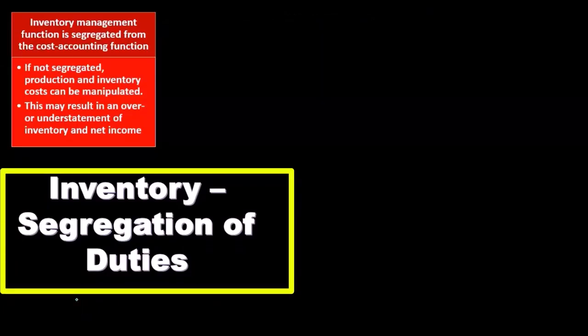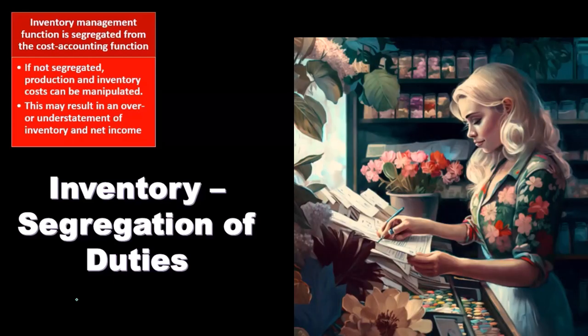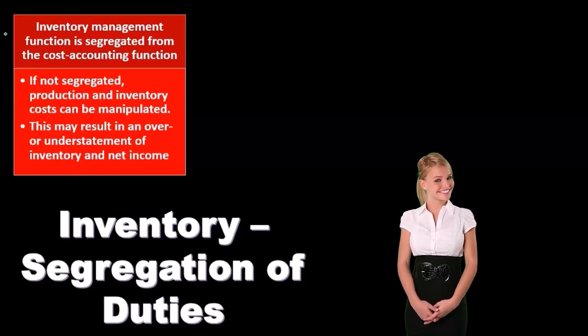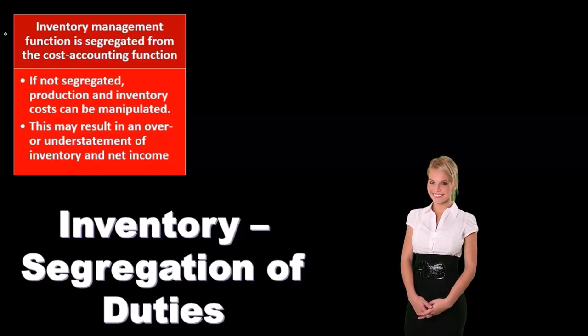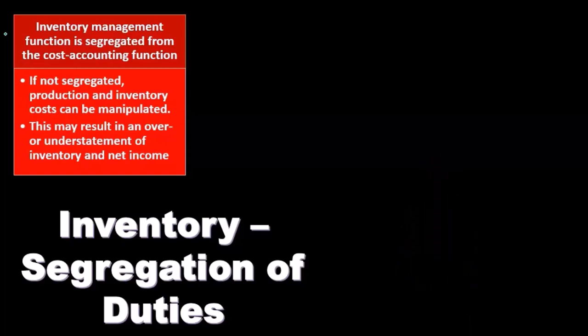Now we'll think about segregation of duties in relation to inventory. This is one of the major internal controls. Segregation or separation of duties means that key components are separated, so that if theft or fraud were to take place, it would require collusion — multiple people planning together to commit fraud. This is a major internal control that should come to mind with any type of system. Note that larger companies can implement more segregation of duties, while smaller companies face more limitations in how much separation is possible.